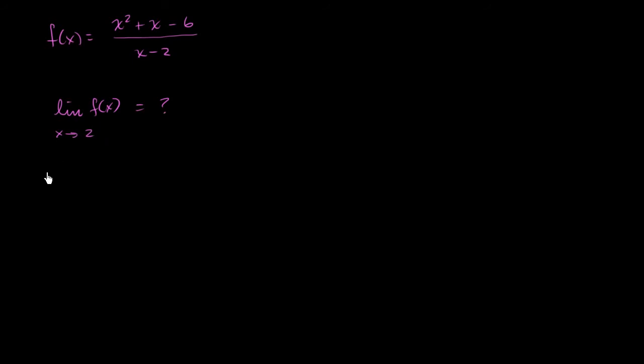So looking at it this way, if we just evaluate f of 2, on our numerator, we're going to get 2 squared plus 2 minus 6. So that's going to be 4 plus 2, which is 6, minus 6. So you're going to get 0 in the numerator, and you're going to get 0 in the denominator. So the function is not defined.